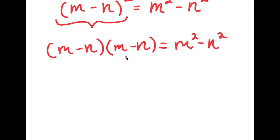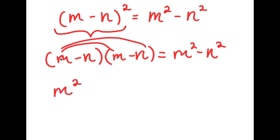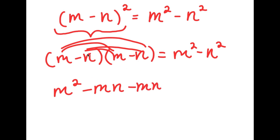From here, I'm going to expand this by multiplying these two. I'll start by distributing the m: m times m is m squared, and m times negative n is negative mn. Now I'm going to distribute the negative n: negative n times m is negative mn, and negative n times negative n is positive n squared.